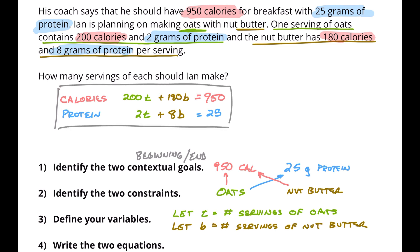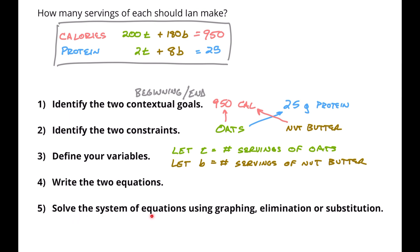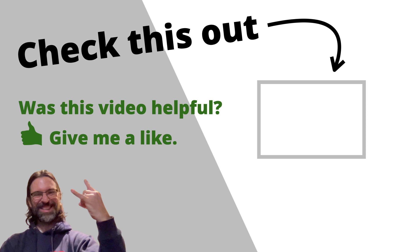Notice again, I've got four items: calories, protein, oats, and nut butter — and of course those are our goals. If this has been helpful and you're seeing how you might apply this, give me a thumbs up, like the video, and share it with a friend. Now let's get to our last step: solve the system of equations using either graphing, elimination, or substitution. We're going to do that in a separate video — you can follow the links in the description or check out the video linked here. I'll see you in the next video.